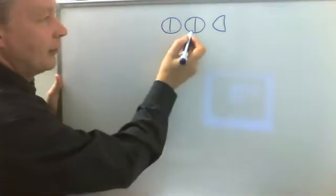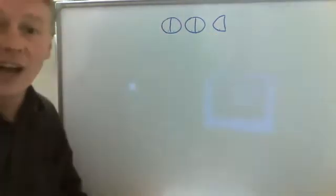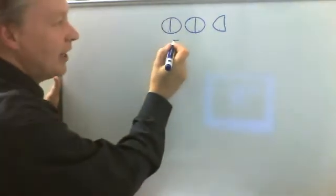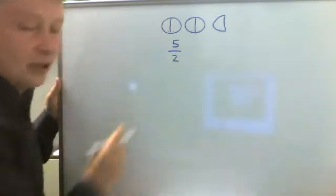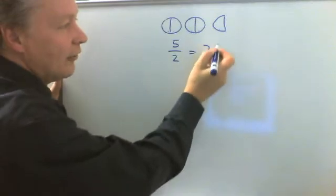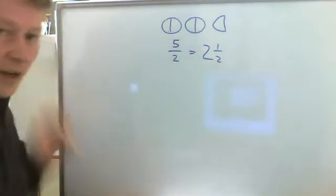So we have one, two, three, four, five halves of pizza. And the way that we write that would be five over two. And what we're saying is that that is the equivalent of two and a half.